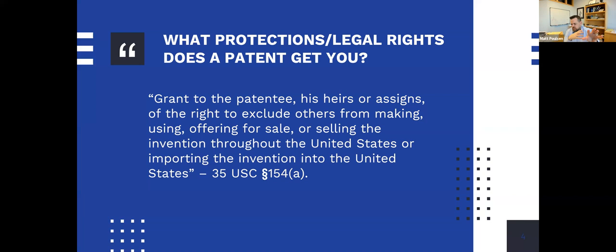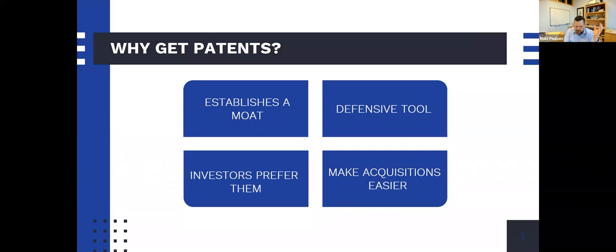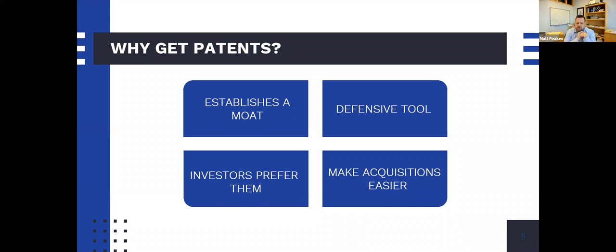If you're manufacturing all your stuff in China but your market is completely in the United States, your U.S. patent is probably enough because you can stop things from coming in from China at the U.S. border. But more practically, why do people actually get them? These are high-level answers, but based on the last slide, it establishes some sort of moat or monopoly. We don't really call it a monopoly, but it provides some buffer between you and your competitors' ability to operate in your space.